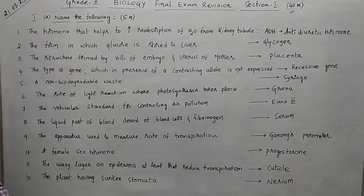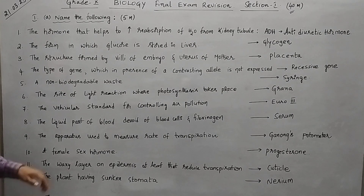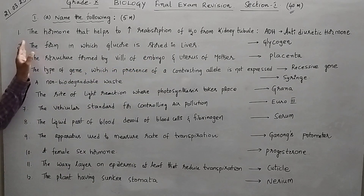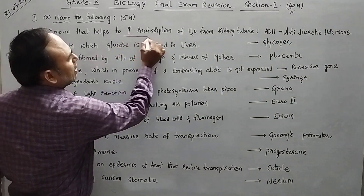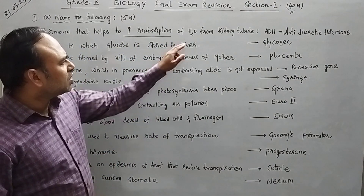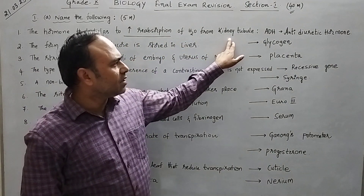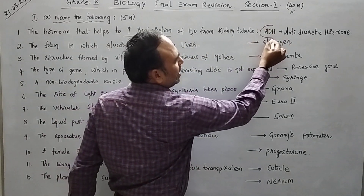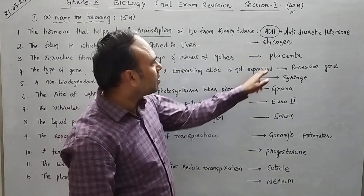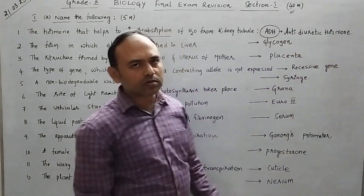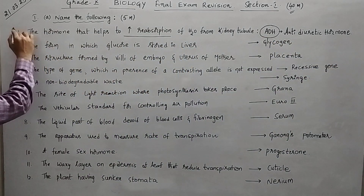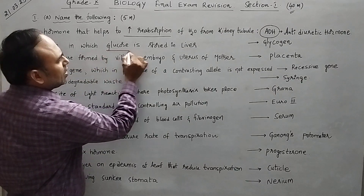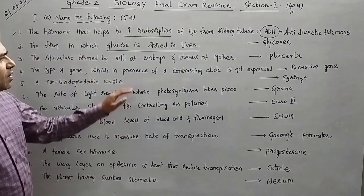First one: the hormone that helps to increase reabsorption of water from the kidney tubule. That hormone is ADH — full form is anti-diuretic hormone. Second question: the form in which glucose is stored in the liver. The key answer here is glycogen.